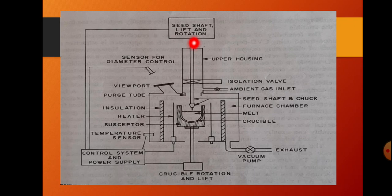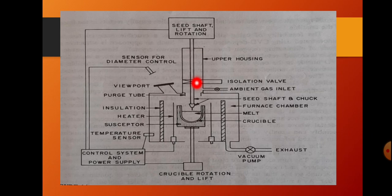This process continues — the seed is dipped into the molten silicon, then pulled upwards, so that the molten silicon over the seed rod solidifies. As a result, we obtain a single crystalline silicon ingot over the seed rod.